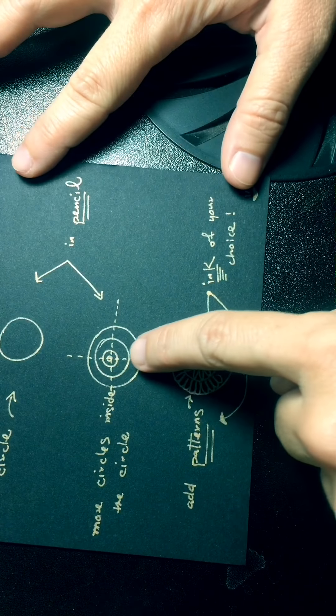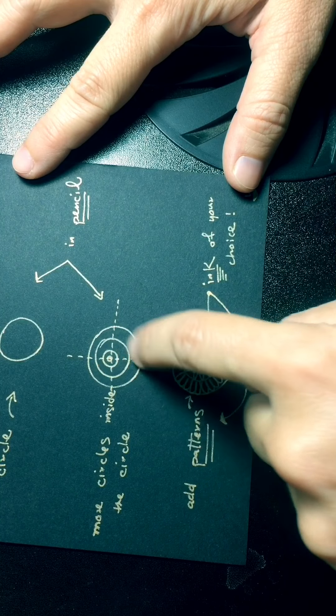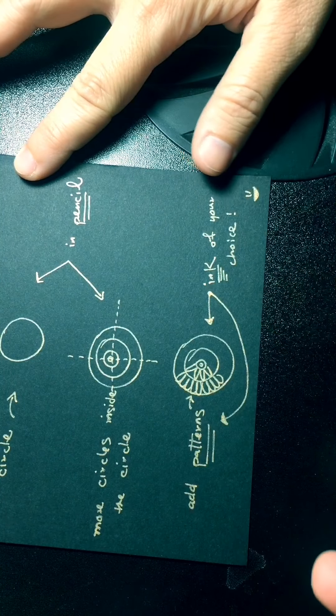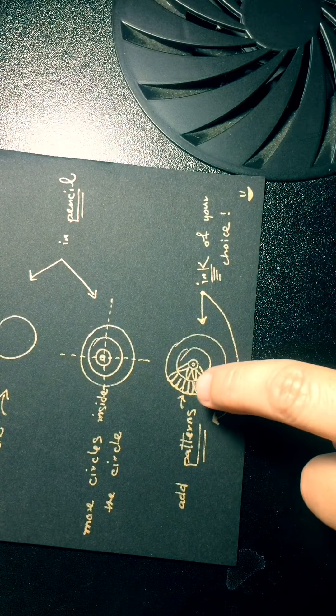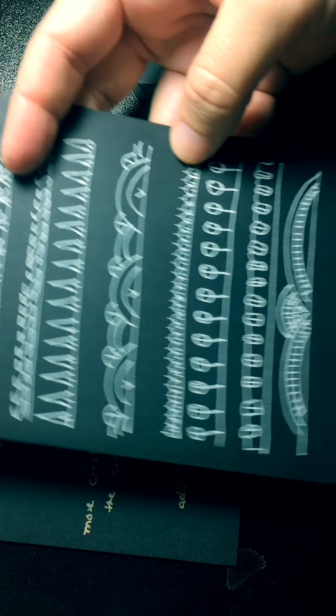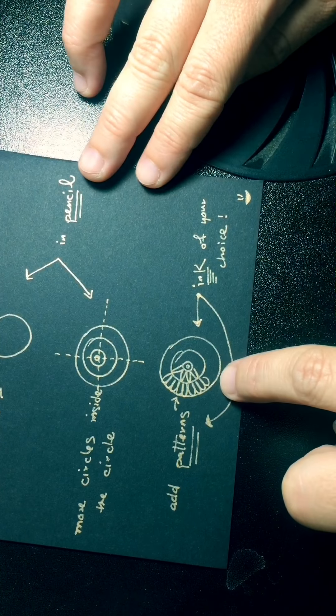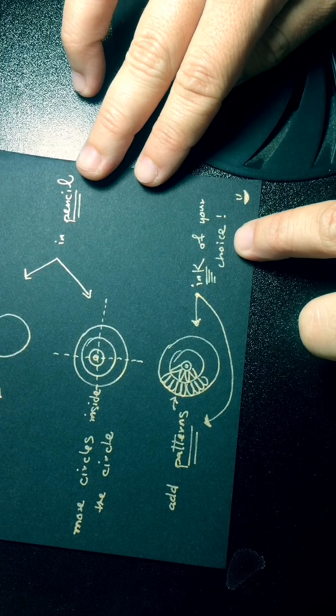Now, once you have these lots of circles, inside circles, divided, you're going to start adding to each circle layer little patterns, any pattern you like. But this you're going to do using ink, the ink of your choice.